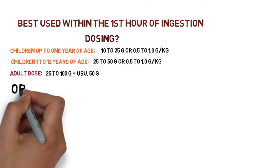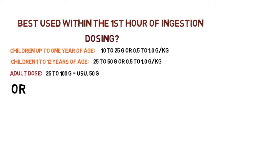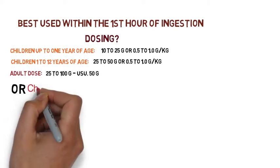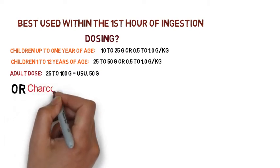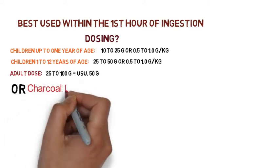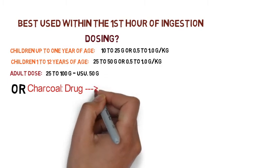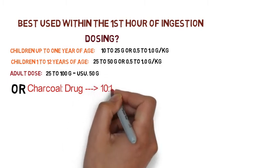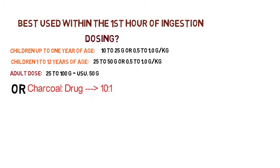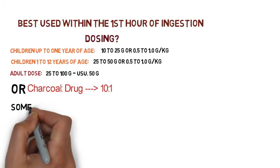There is an alternative regimen which is a charcoal-to-drug ratio of 10 to 1, meaning 10 grams of charcoal for every one gram of drug.